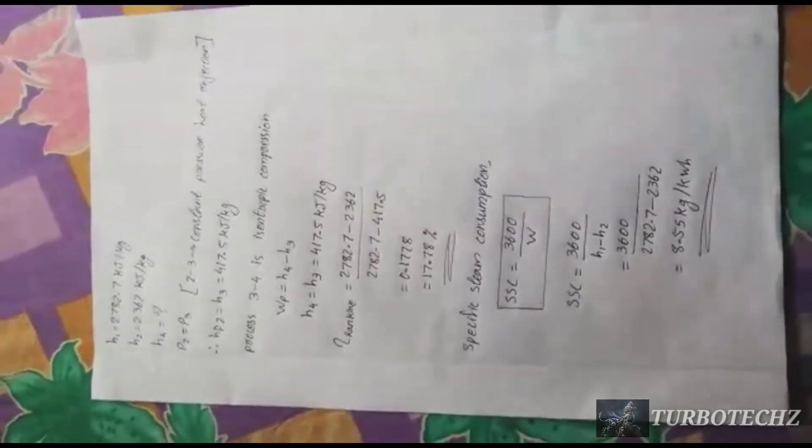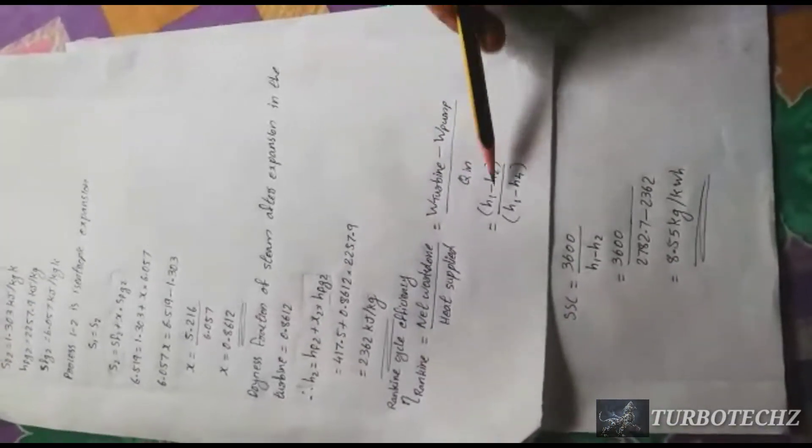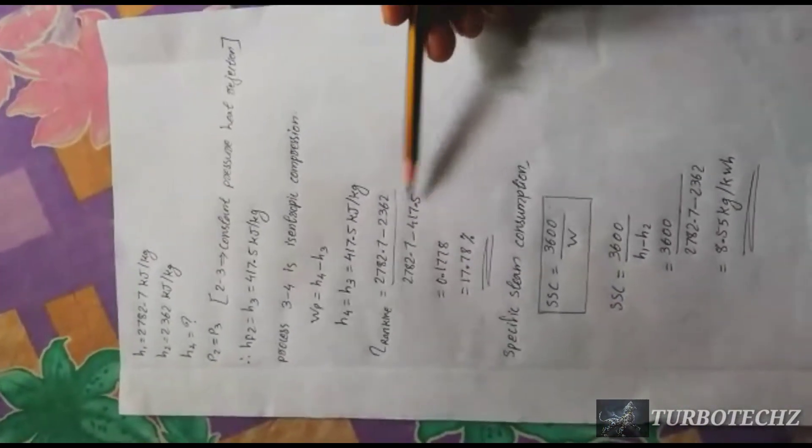Eta Rankine is the equation. That is H1 minus H2 by H1 minus H4. The value is H1 minus H2 by H1 minus H4. That is the answer. Eta Rankine equals 17.78%.